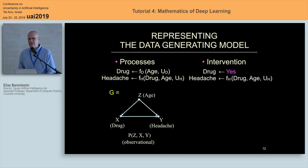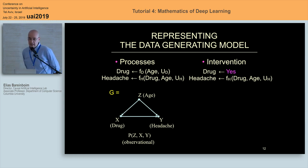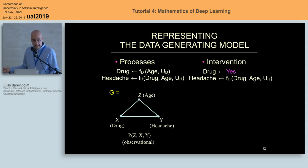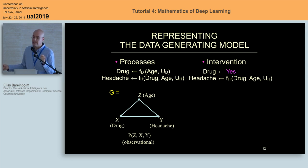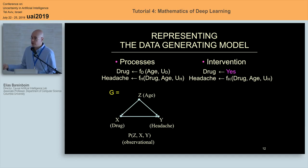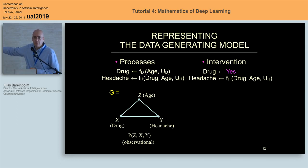The idea of intervention comes from the do-operator defined by Yuda Pearl. It essentially says: go to the original system and replace the mechanism F_D — the natural way people take the drug — by a constant. A constant meaning the person will get the drug; there is no option. That's the replacement operator: you overwrite the original mechanism by a constant. You can play the game of replacing with other functions, but the primitive I care about here is replacing by a constant.